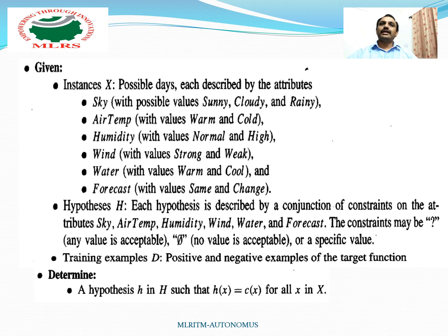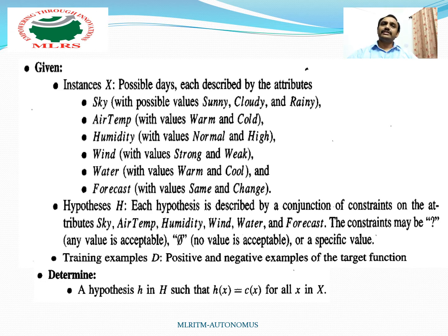Instances are described by different attribute values. In the enjoy sport example, the different attributes are sky, air temperature, humidity, wind, water, and forecast, each represented by different values. Each hypothesis is described by the combination of conjunctions of different attributes. The target concept C is enjoy sport, where x value is either 0 or 1 — 0 for a negative example and 1 for a positive example.